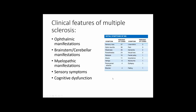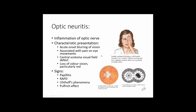Because MS affects a wide range of CNS structures, there is a very wide range of presentations that may be somewhat non-specific. Key clinical features to look out for include ophthalmic manifestations, brainstem manifestations, myelopathic manifestations, sensory and cognitive features — in particular sensory loss, optic neuritis, weakness, and paresthesia.